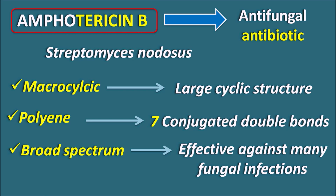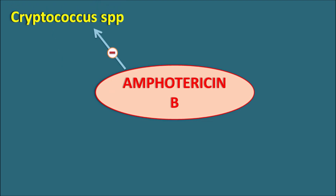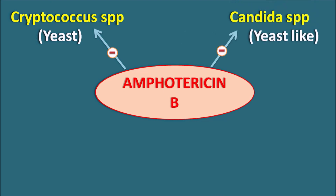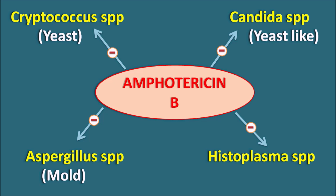Amphotericin B has a broad spectrum of activity. It is effective against Cryptococcus species, which are yeast infections, and Candida species, which are yeast-like fungal infections. It is also effective against Aspergillus species, which are mold fungal infections. Finally, this drug is also useful against fungal infections produced by Histoplasma species, which are dimorphic — having properties of both yeast and mold type fungus. So Amphotericin B can be used in yeast, yeast-like, mold, and dimorphic fungal infections.